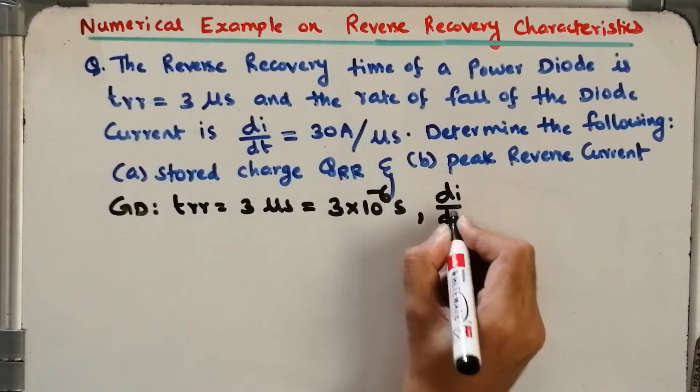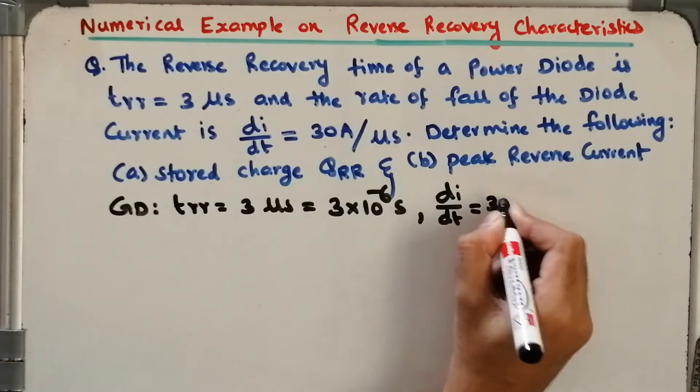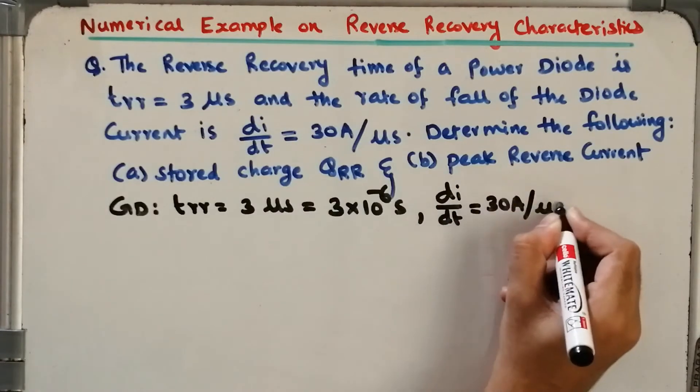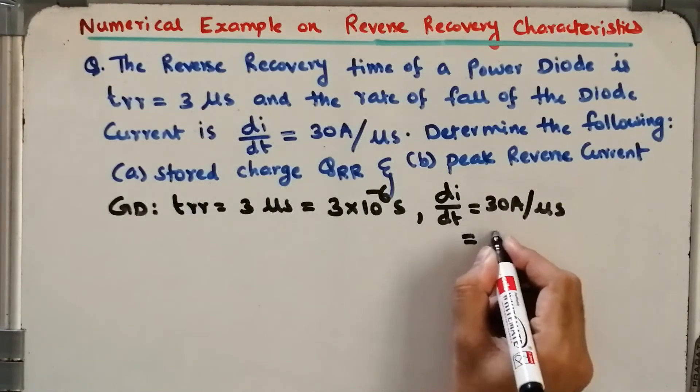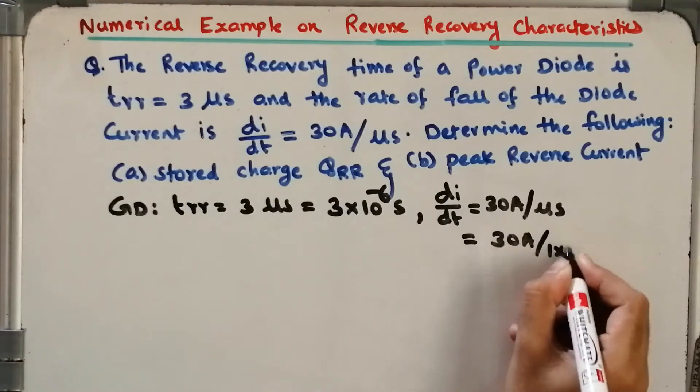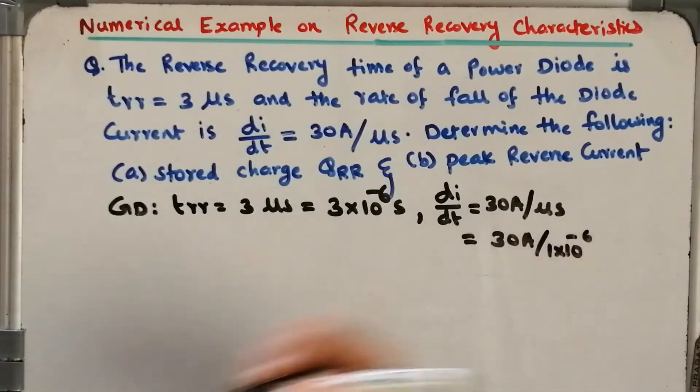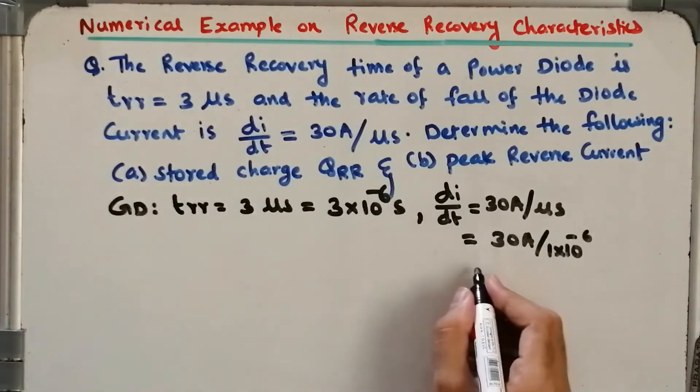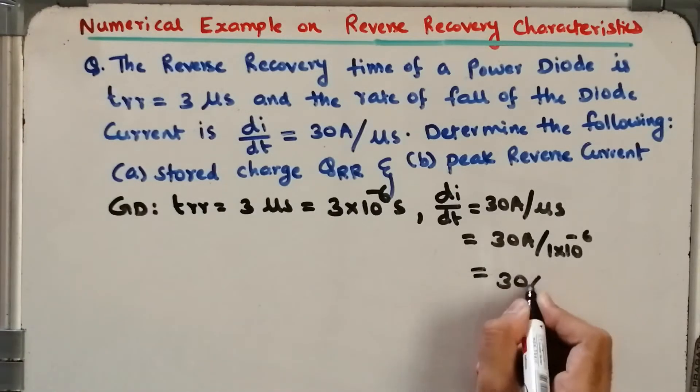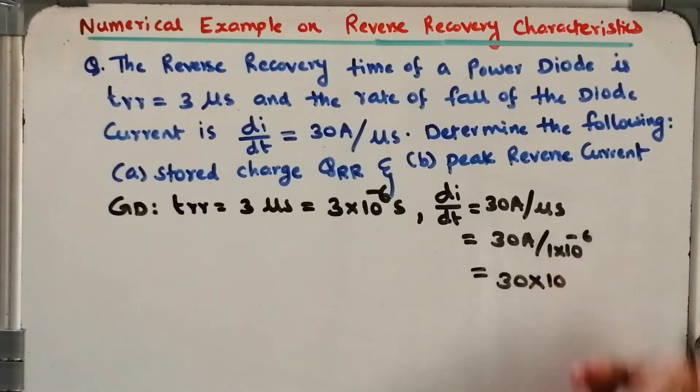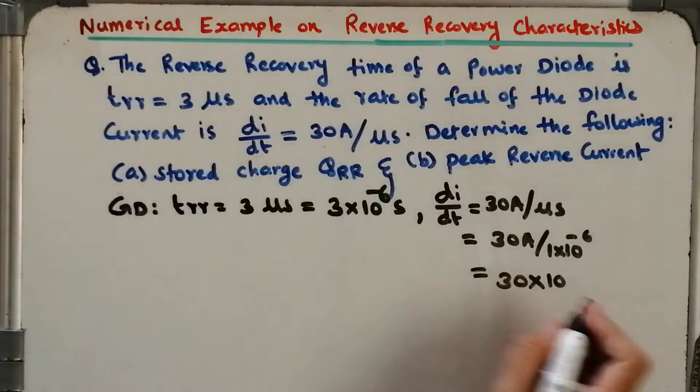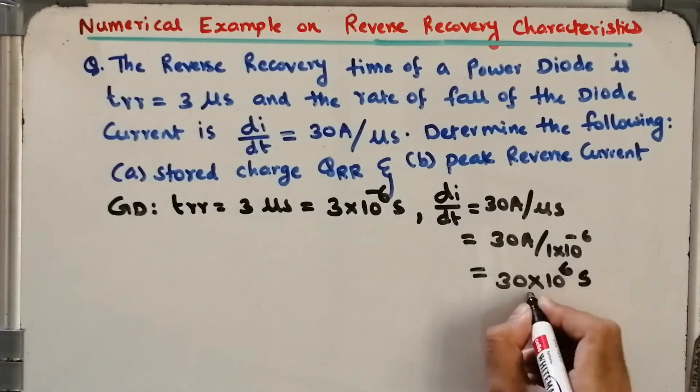That is equal to 30 Ampere per microsecond. So the minus sign moves to the upper side, it becomes 30 times 10 to the power 6 per second.